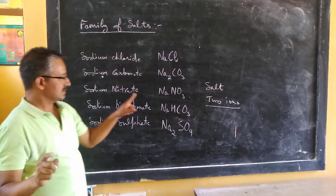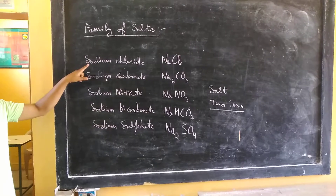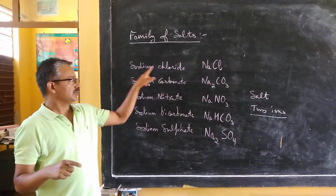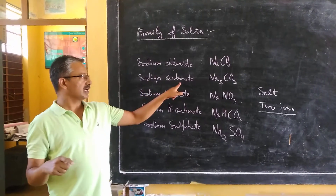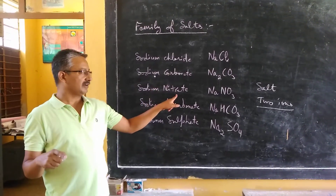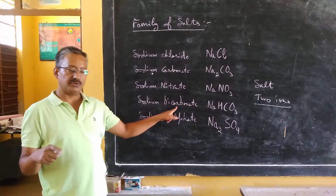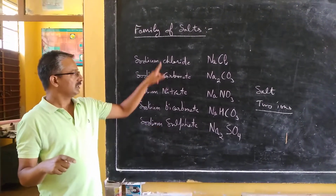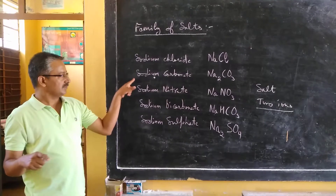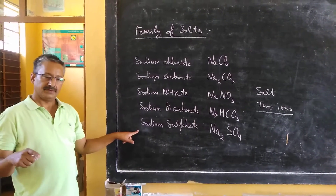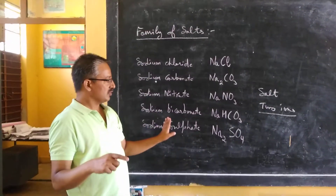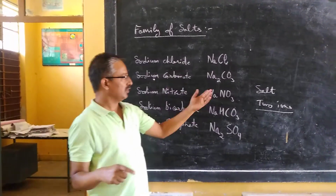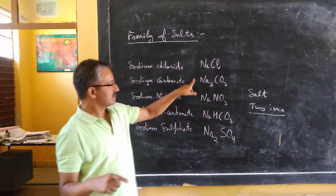Now just like, see this example. I have written two ions. Sodium salts are: sodium chloride, sodium carbonate, sodium nitrate, sodium bicarbonate, sodium sulfate. Now, what is common in these? Sodium is common. So all these five salts belong to the sodium family.